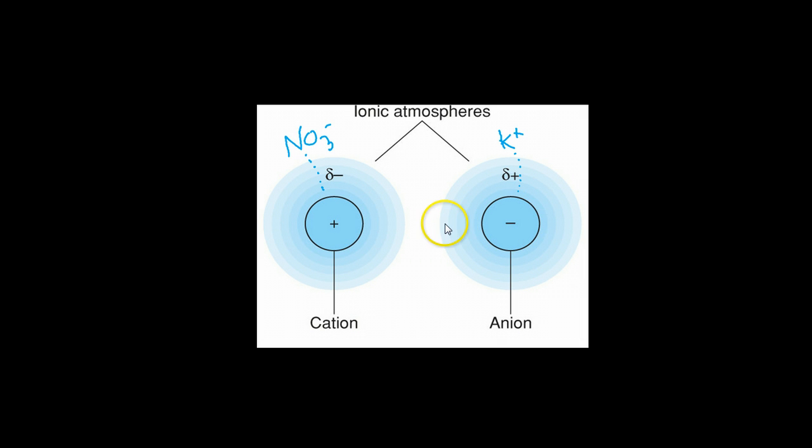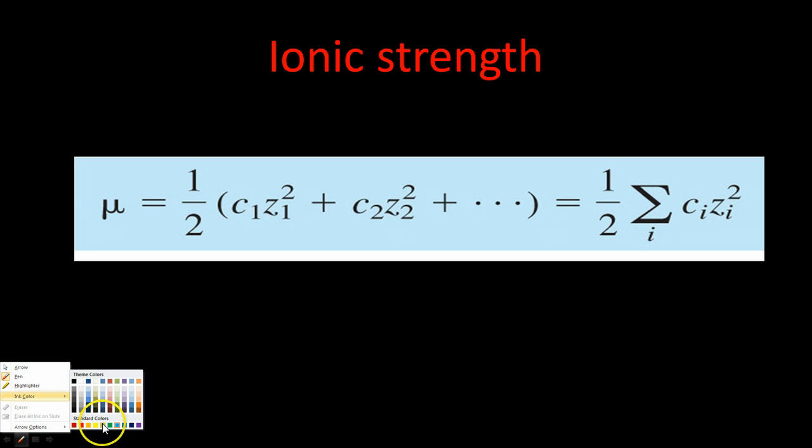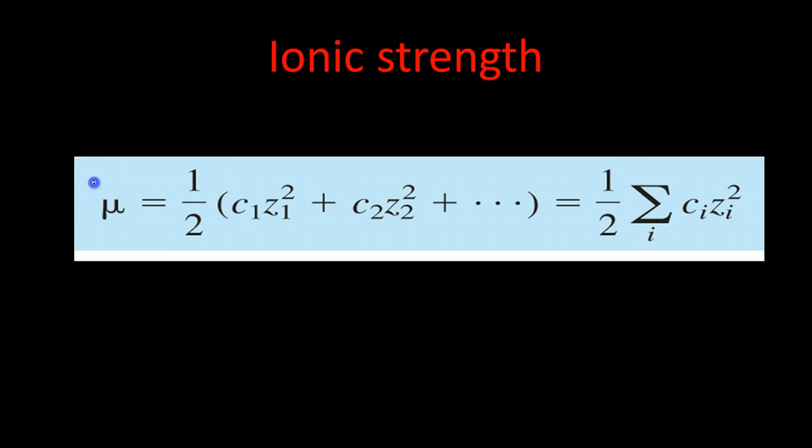By essentially shielding these anions and cations with this ionic atmosphere, we decrease the effective concentration of it. So by decreasing the effective concentration, that ended up having some implications on the equilibrium processes that we looked at. We quantified this by this term called ionic strength, and so ionic strength we called μ here, that equals ½ concentration of all species times the charge. We found that both the charge and the concentration played a role, and it turns out that the charge played a larger role.